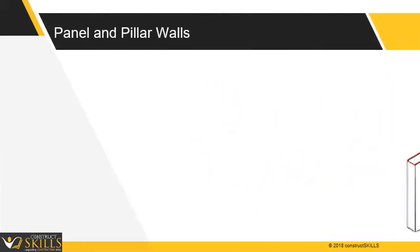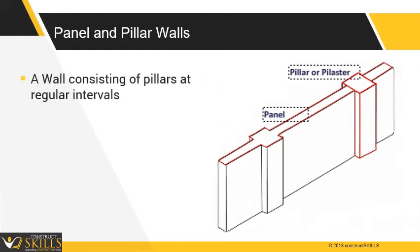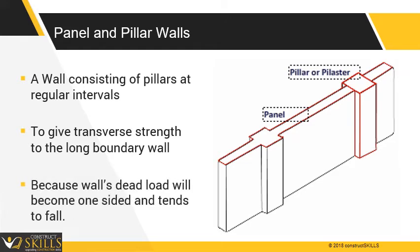Bed Joints and Perpends: these are horizontal joints of brick or stone masonry. Panel and Pillar Walls: a wall consisting of pillars at regular intervals with a thin portion of wall to give transverse strength to a long boundary wall, because the wall's dead load will become one-sided and tends to fall.